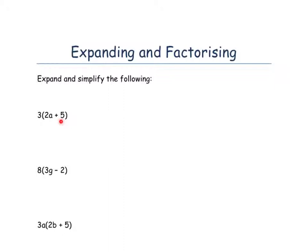Firstly, we're going to expand 3 in brackets 2a plus 5. Remember, expanding means multiplying out. So 3 times 2a, which is 6a, because 3 times 2 is 6, and 3 times 5 is plus 15, because we have a plus here. We can't do anything else to that because they're not the same letters as each other.